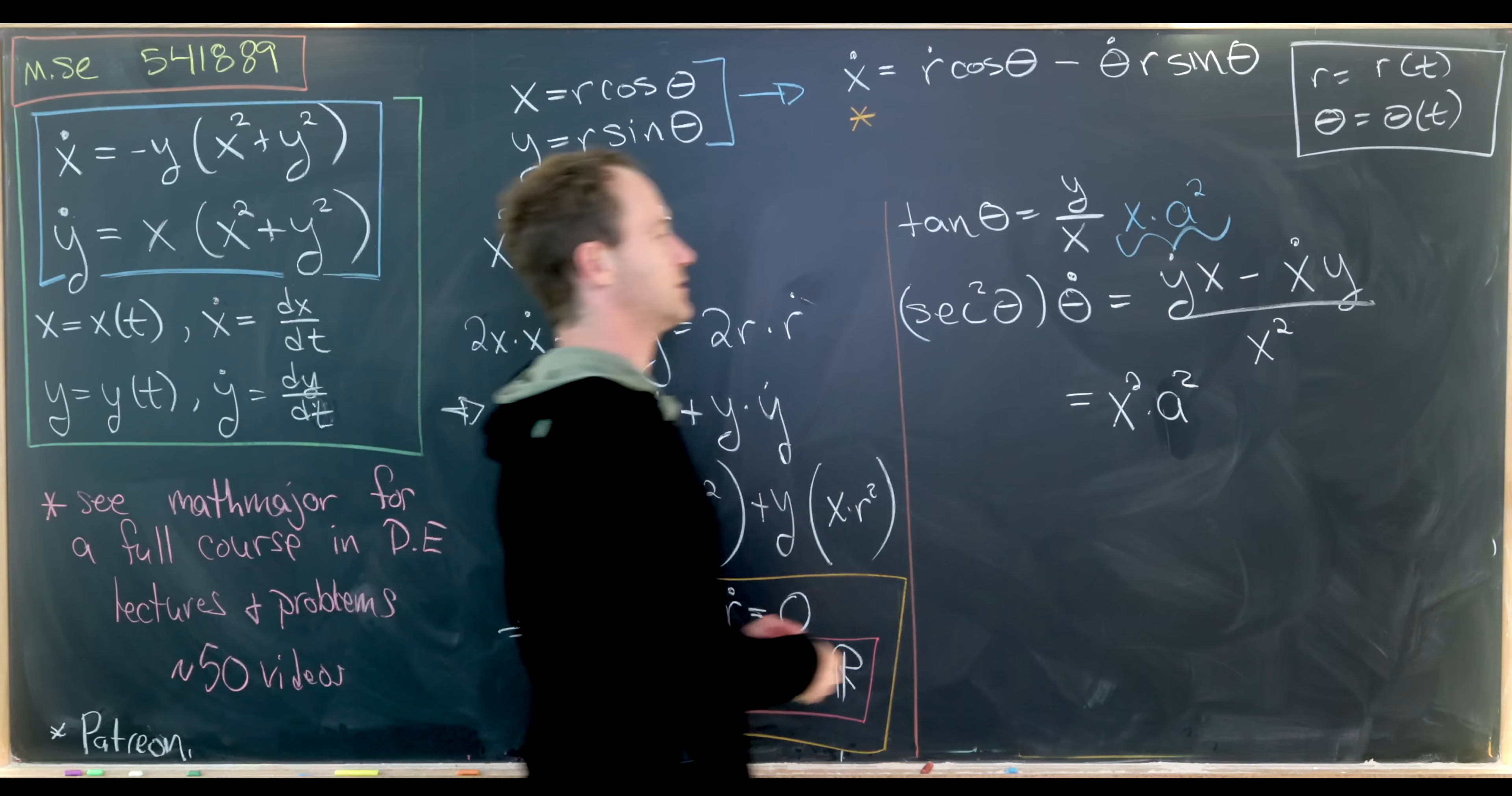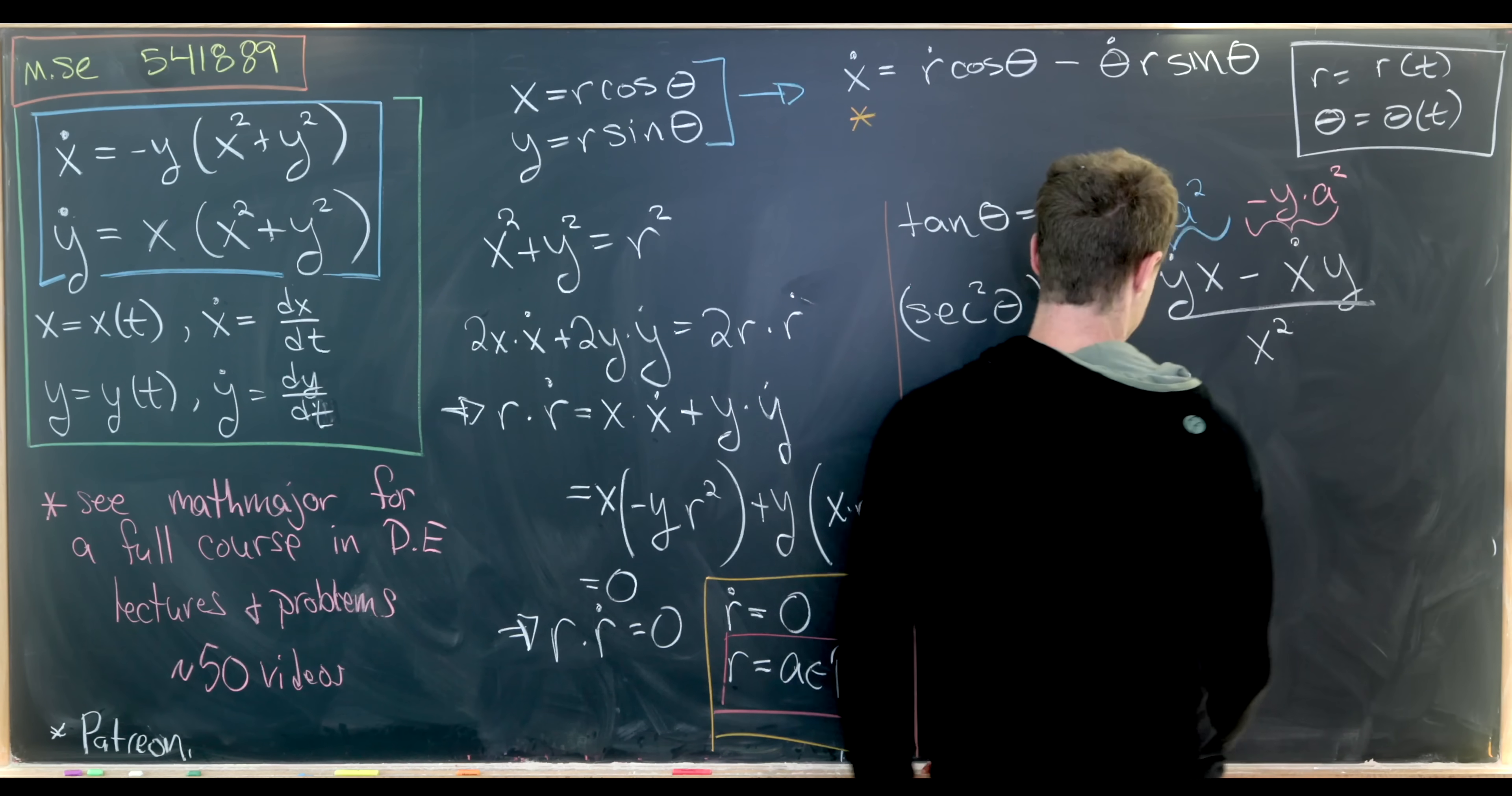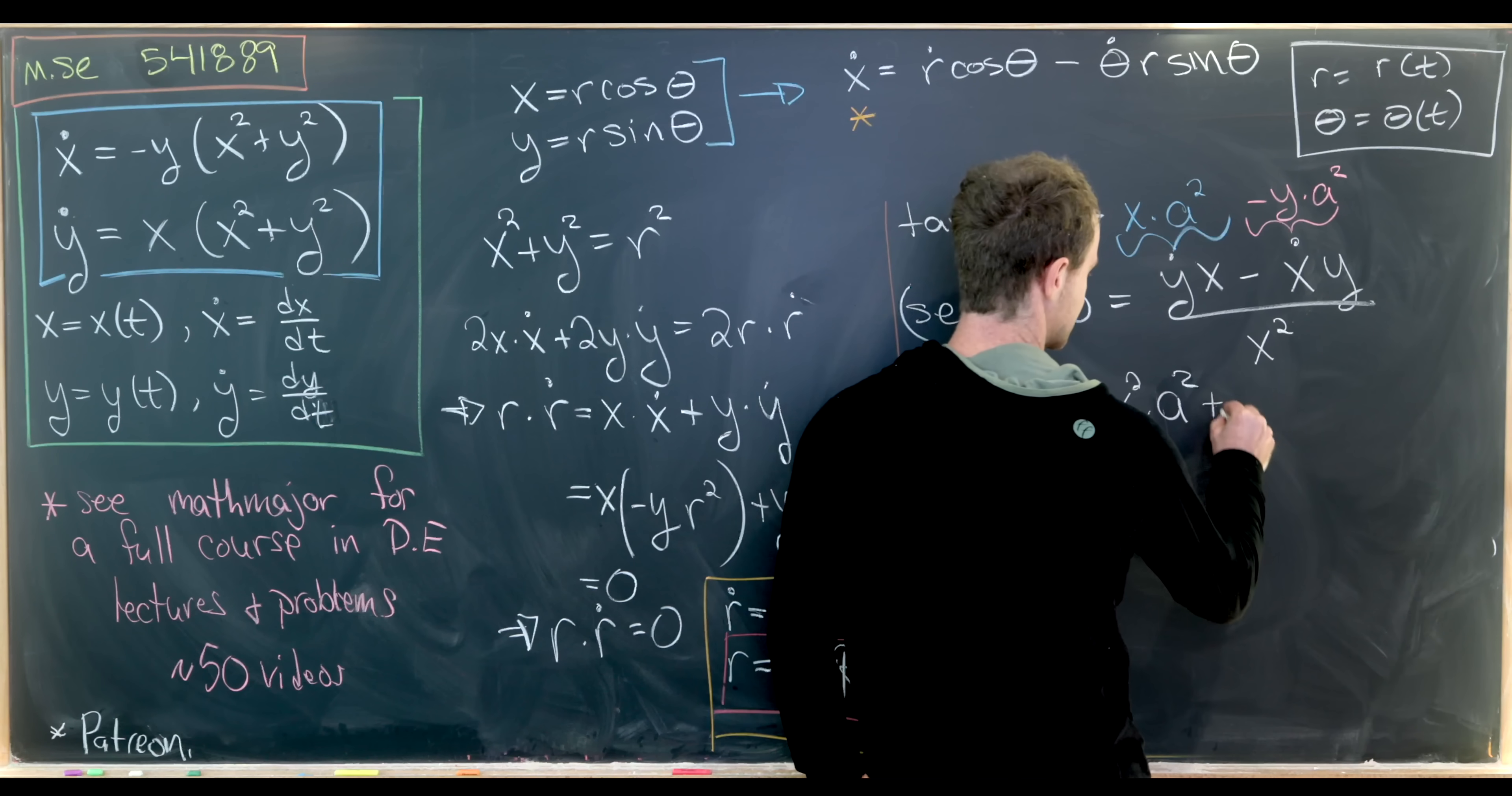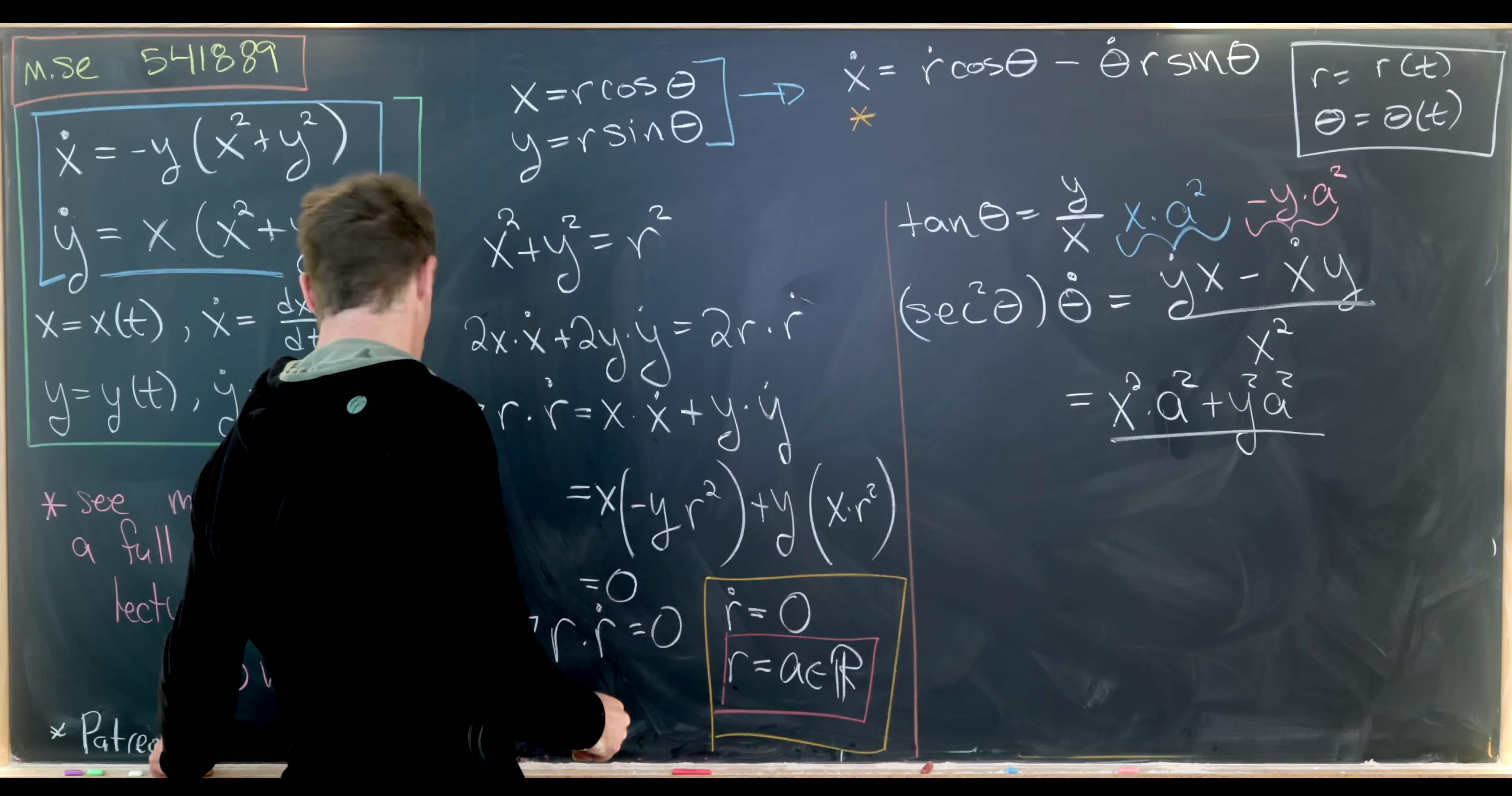And now we'll do a similar expansion over here. We know x dot is equal to negative y times a squared for the same sort of reason. So let's notice those minus signs cancel and we get plus y squared times a squared.